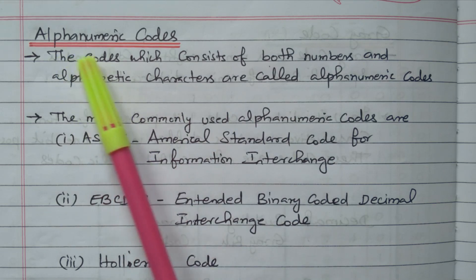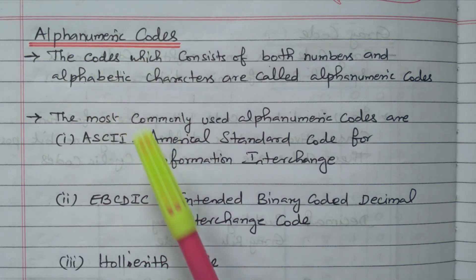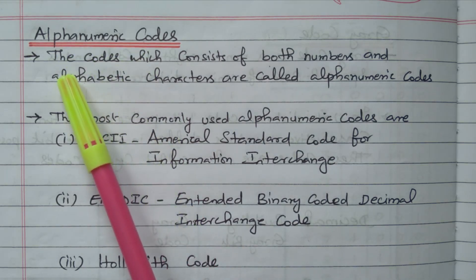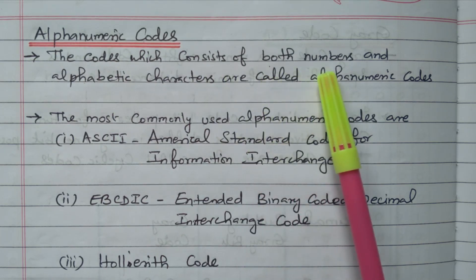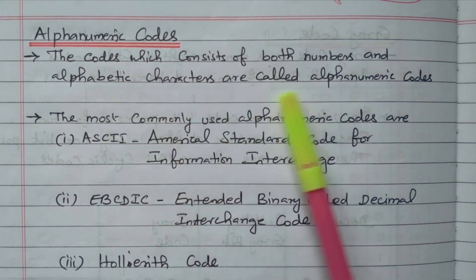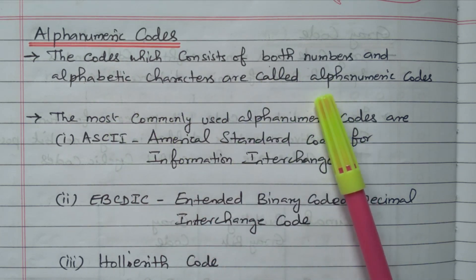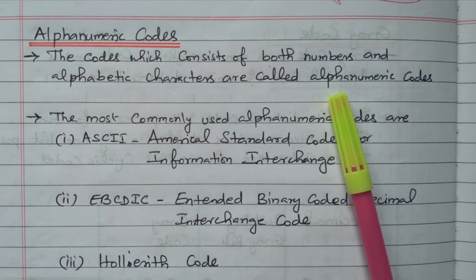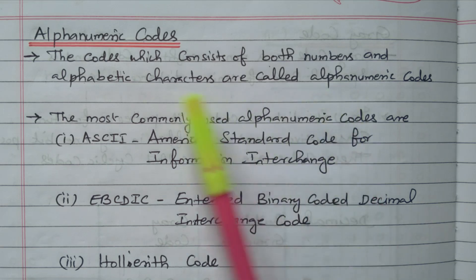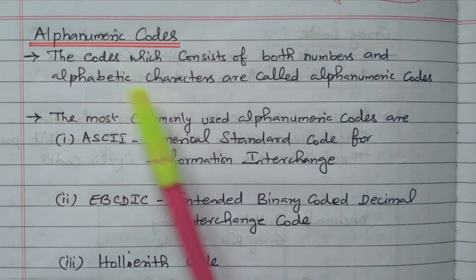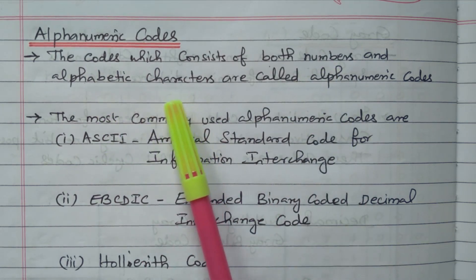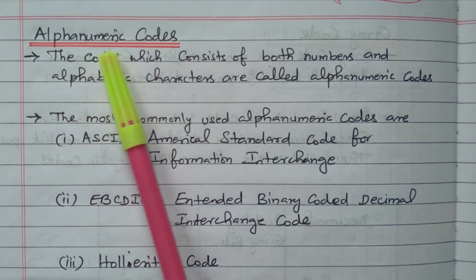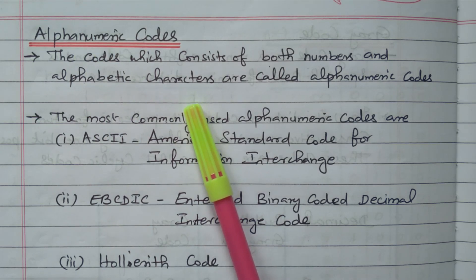In this video we will see the alphanumeric code. Alphanumeric code means the code which consists of both numbers and alphabet characters. Other codes have only numbers — zeros and ones — but only in alphanumeric code we have numbers as well as alphabetical characters.